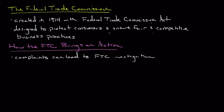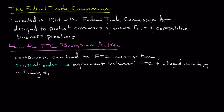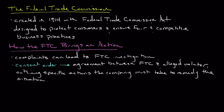One of the first things the FTC might do is initiate what's called a consent order. In certain cases, the FTC may opt for this consent order, which is essentially an agreement between the FTC and the alleged violator outlining specific actions the company must take to remedy the situation. The consent order often involves committing to change business practices, undergoing regular compliance audits, and potentially paying restitution to affected consumers.